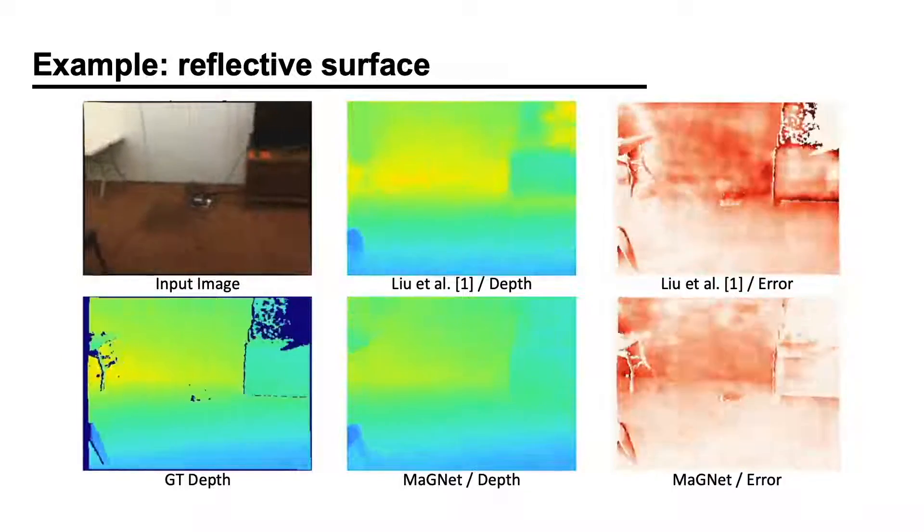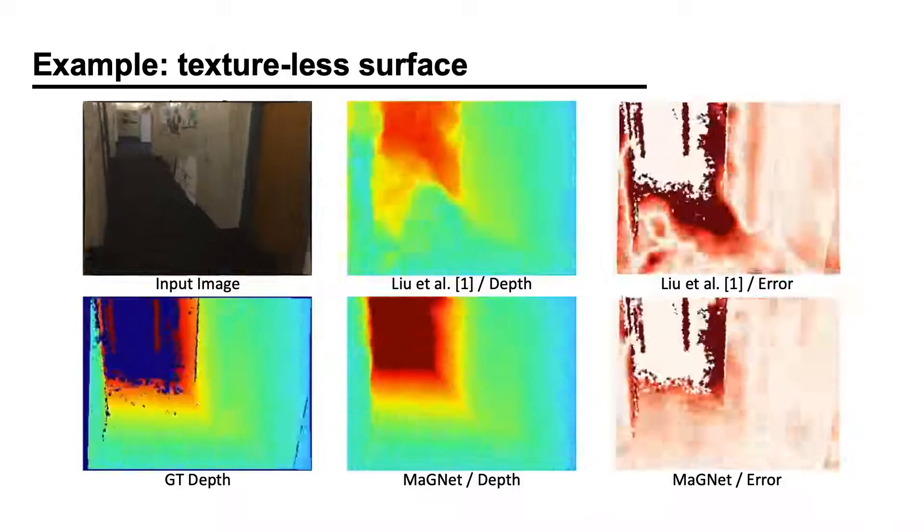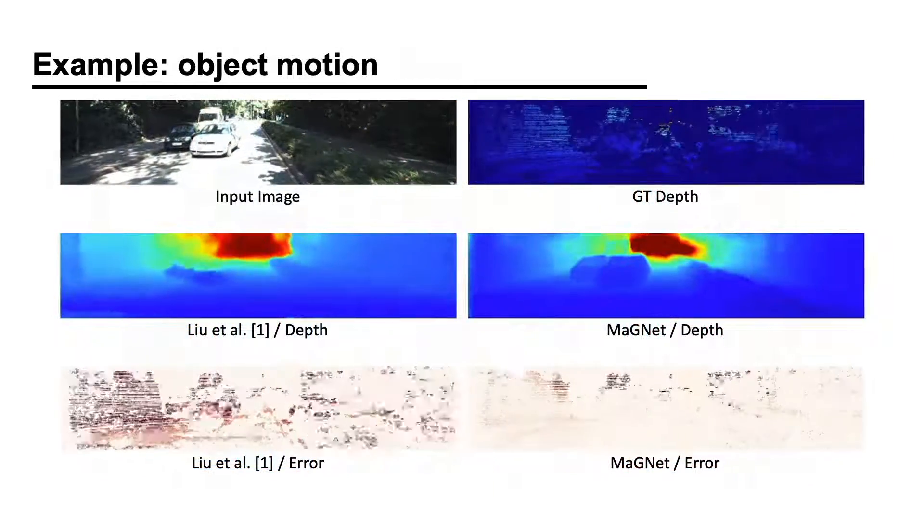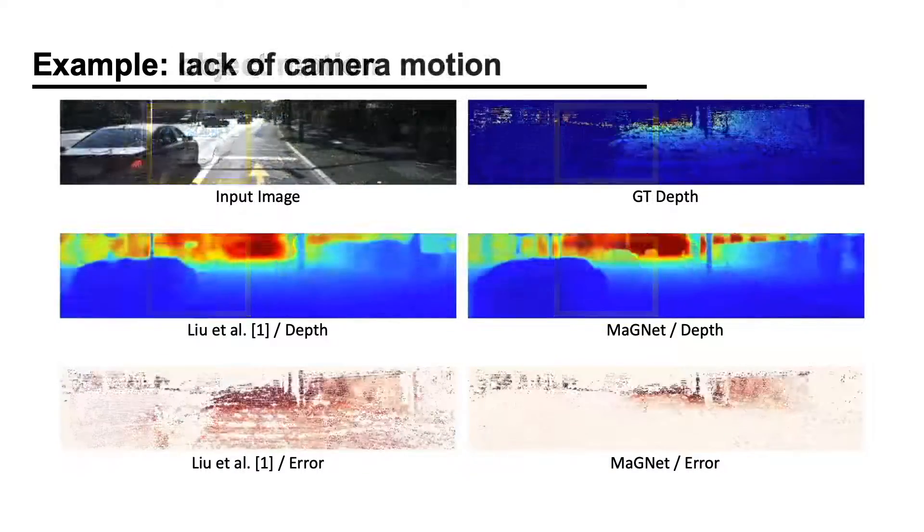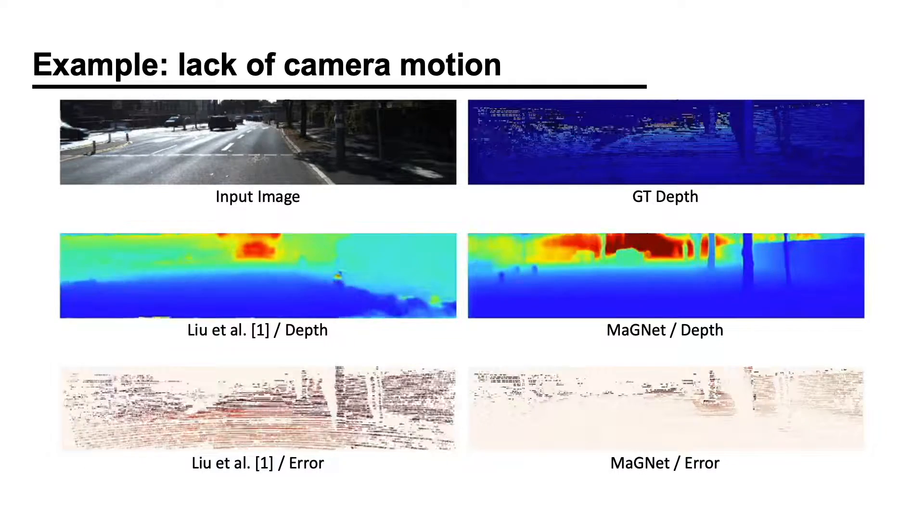To summarize, MaGNet enforces the multi-view prediction to be consistent with the single-view depth probability distribution. This makes MaGNet robust against challenging artifacts such as reflective surfaces, textureless surfaces, moving objects, occlusion, and lastly, the lack of camera motion, which makes it difficult to use the geometric cues.